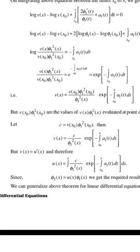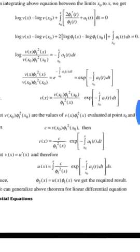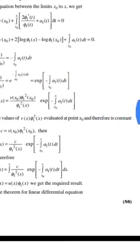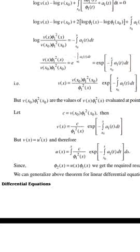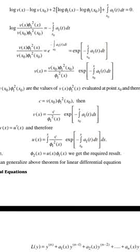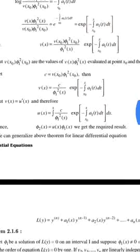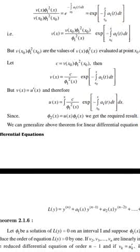Since v(x₀)φ₁²(x₀) is the value evaluated at point x₀, it is a constant. Let c = v(x₀)φ₁²(x₀). Then v(x) = c / φ₁²(x) · exp(−∫[x₀ to x] a₁(t) dt). Since v(x) = u'(x), we have u(x) = ∫ [c / φ₁²(x)] · exp(−∫[x₀ to x] a₁(t) dt) ds.